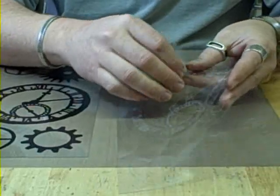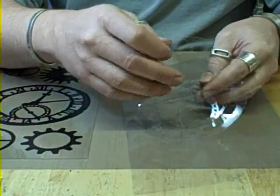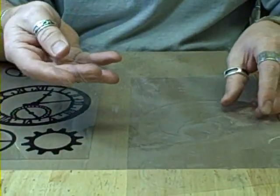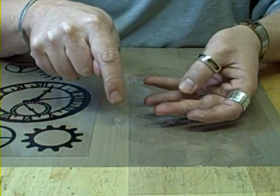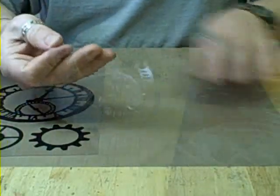But when you peel it off, you need to be careful because this can tear. So you want to peel this off. When you first peel it off the back, you may have some little pieces that are stuck in there. And that's why we have to prep it.